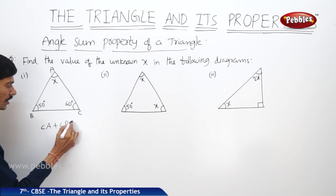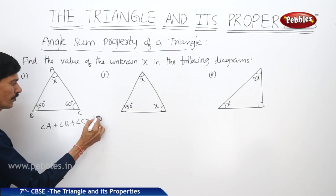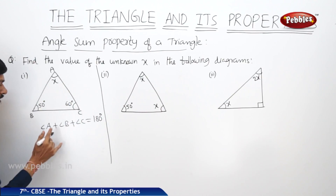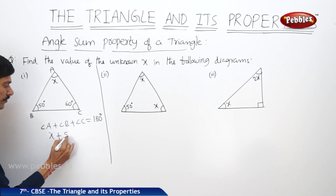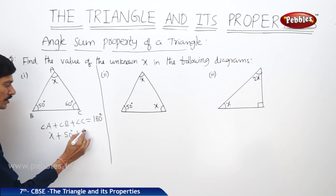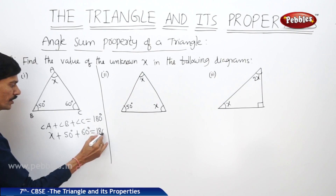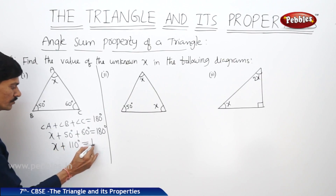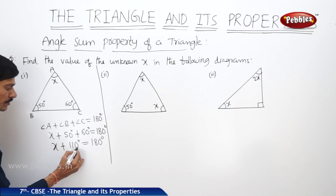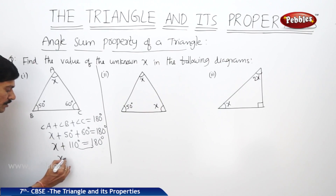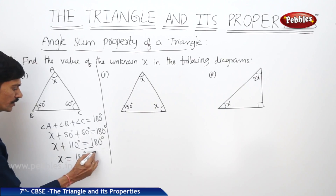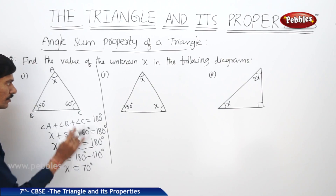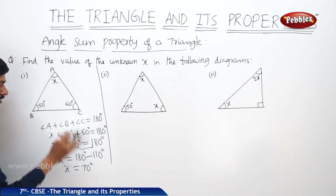According to this property, the sum of the three angles is 180 degrees: angle A plus angle B plus angle C equals 180 degrees. So angle A is X, angle B is 50 degrees, and angle C is 60 degrees. X plus 50 plus 60 equals 110 degrees, which equals 180 degrees. By transposing 110 to the RHS, we get X equals 180 minus 110, so X equals 70 degrees. In the first diagram, the value of X is 70 degrees.